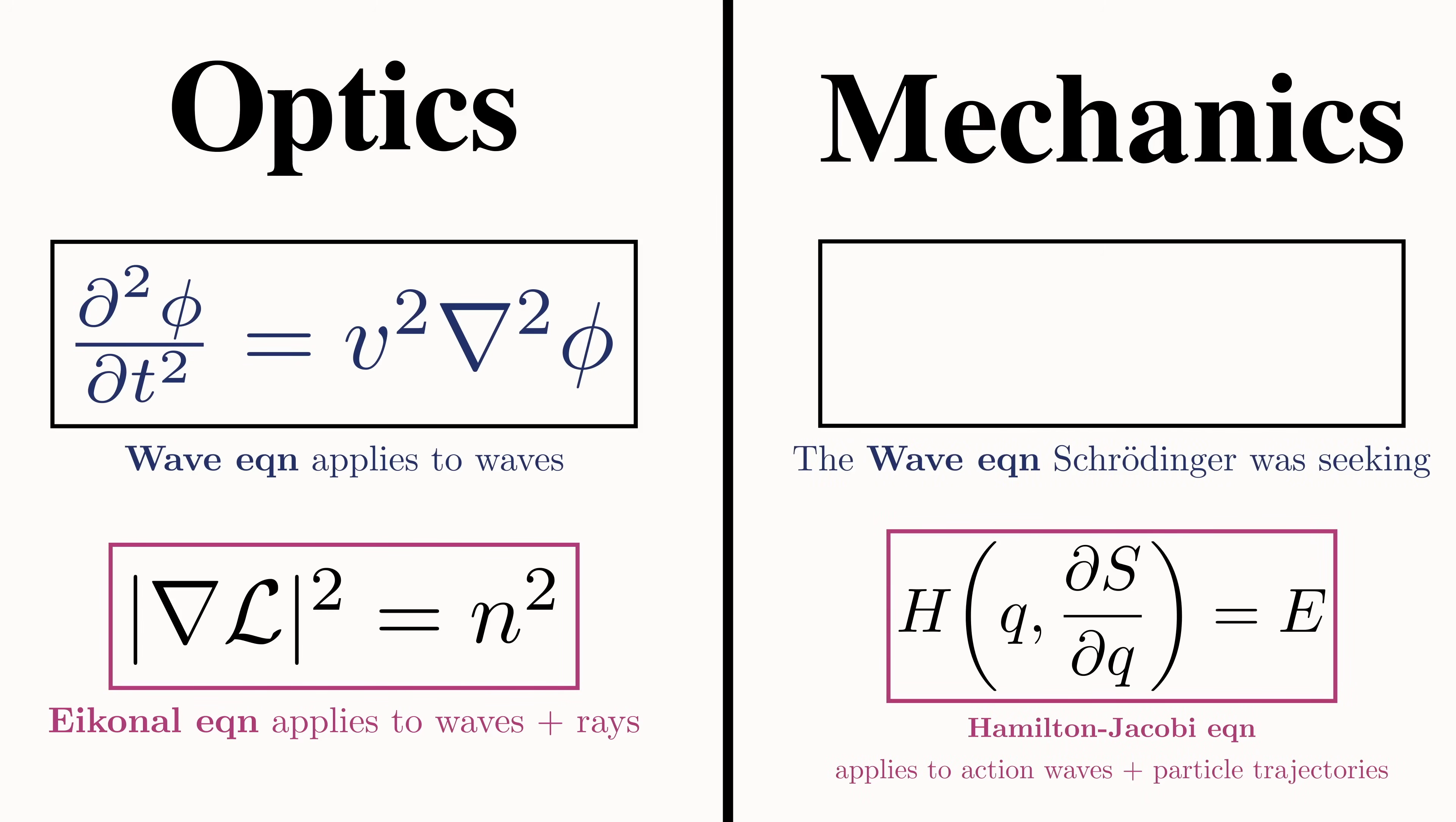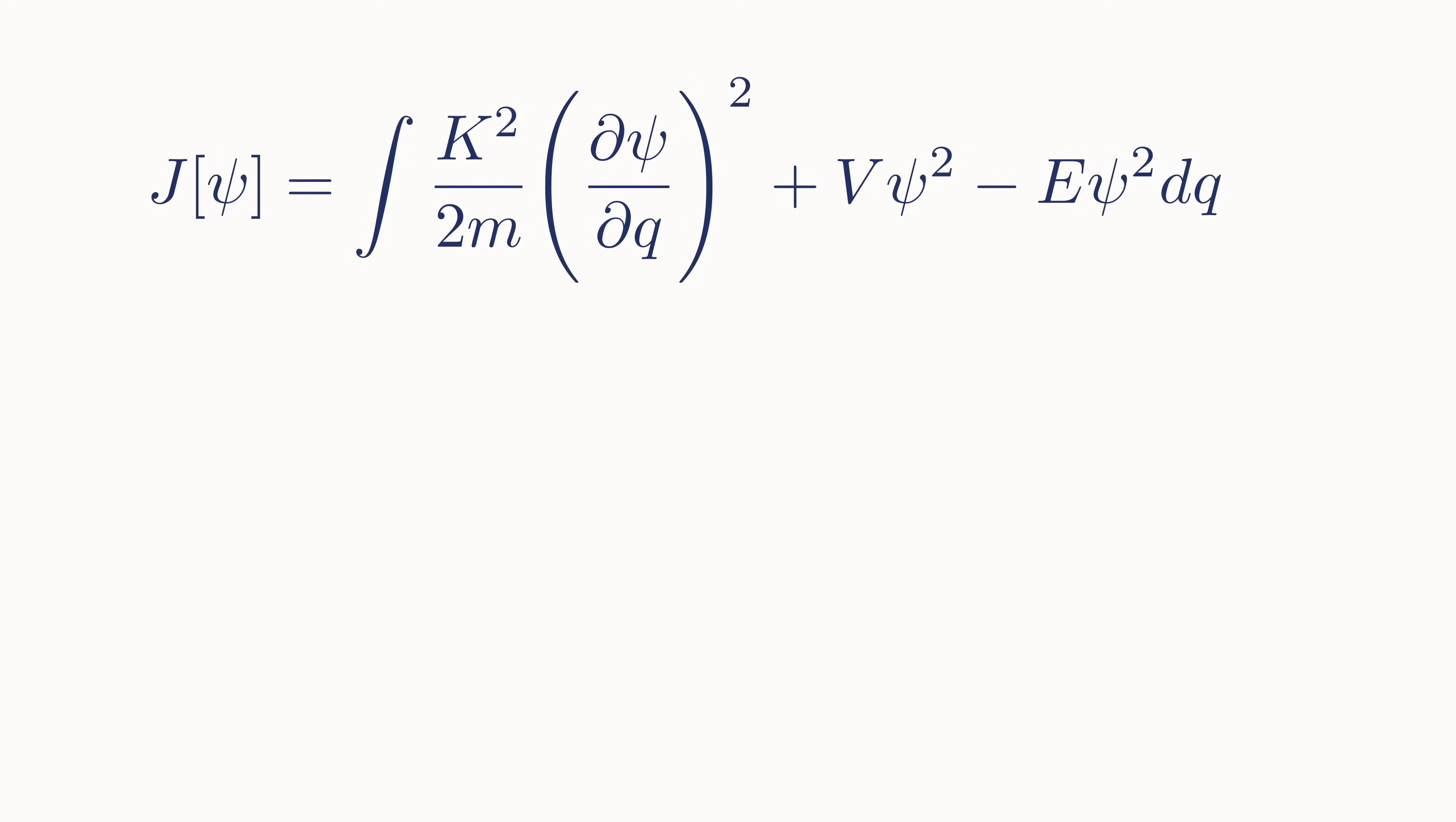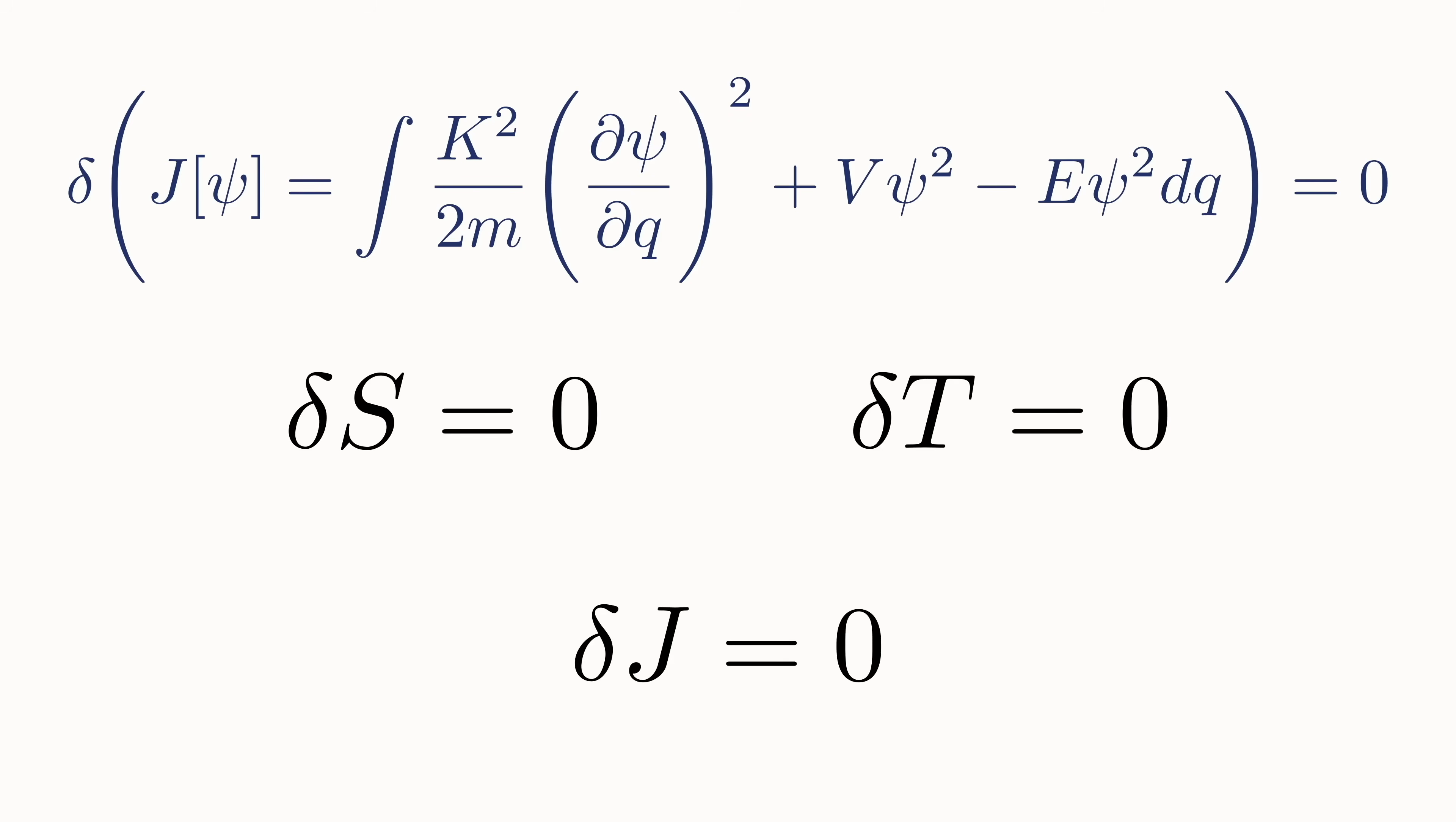It is this new variation problem he defines that does exactly that. As Schrödinger says in his paper, we seek a function which makes the integral stationary and we replace the quantum conditions with this variational problem. In other words, setting the variation of j equal to zero is the deeper principle that replaces the previous quantum conditions. And when he does this, he is essentially defining a new action with this quantity j. If you want to understand more deeply why, just pause the video here. So just as Fermat's principle of least time and Maupertuis' principle of least action required the variation to be zero, Schrödinger requires the variation of j to be zero.